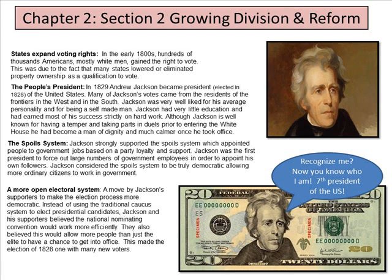The people's president: in 1829, Andrew Jackson became president, elected in 1828. Many of Jackson's votes came from residents of the frontiers in the West and the South. Jackson was well liked for his average personality and for being a self-made man with very little education. Although Jackson is well known for having a temper and taking part in duels prior to entering the White House, he became a man of dignity and much calmer once he took office.